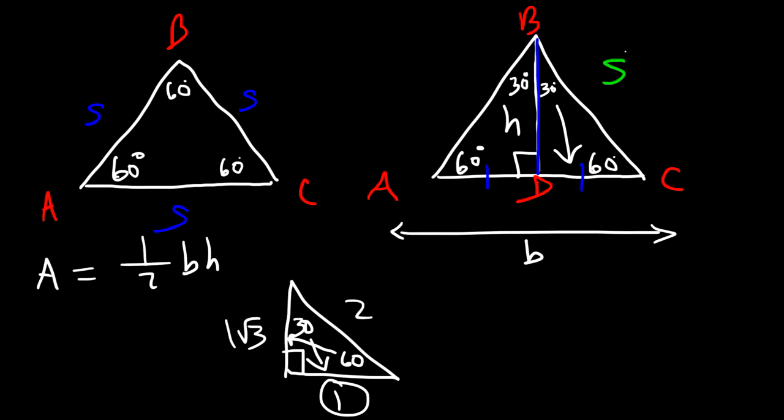So across the 30, it's going to be half of whatever the hypotenuse is. And so that's going to be S divided by 2. And that makes sense. Because DC has to be half of AC. And so half of S is S over 2. So now that we have DC, we can use that to find H. So across the 60, it's going to be whatever this is times the square root of 3. So it's the square root of 3 times S divided by 2.